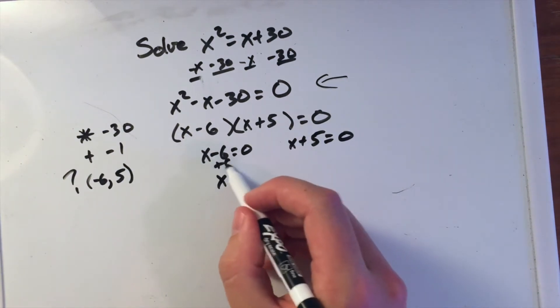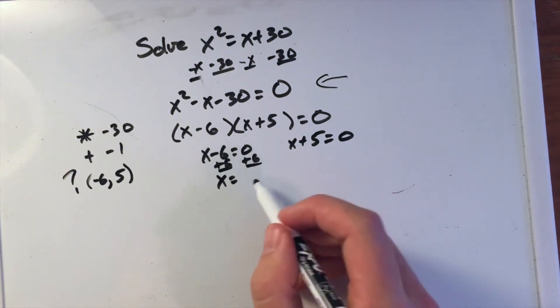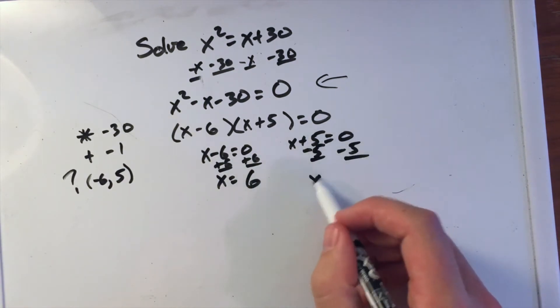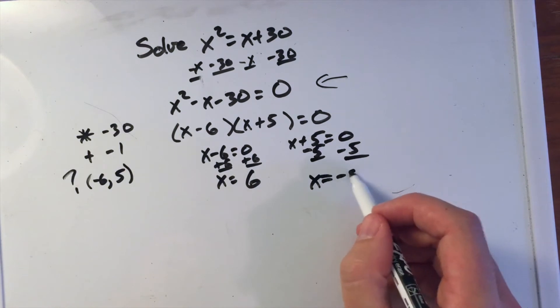We add a 6 to both sides and have x equals positive 6, as well as subtract a 5 from both sides and we're left with x equals negative 5.